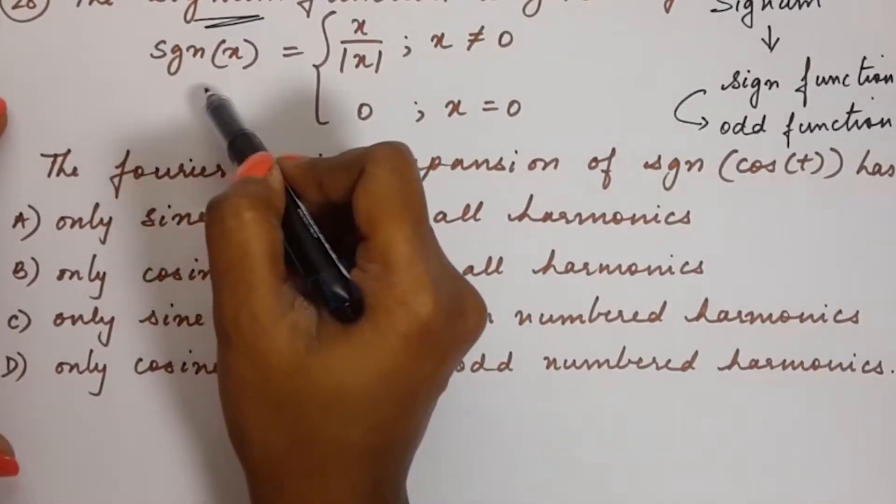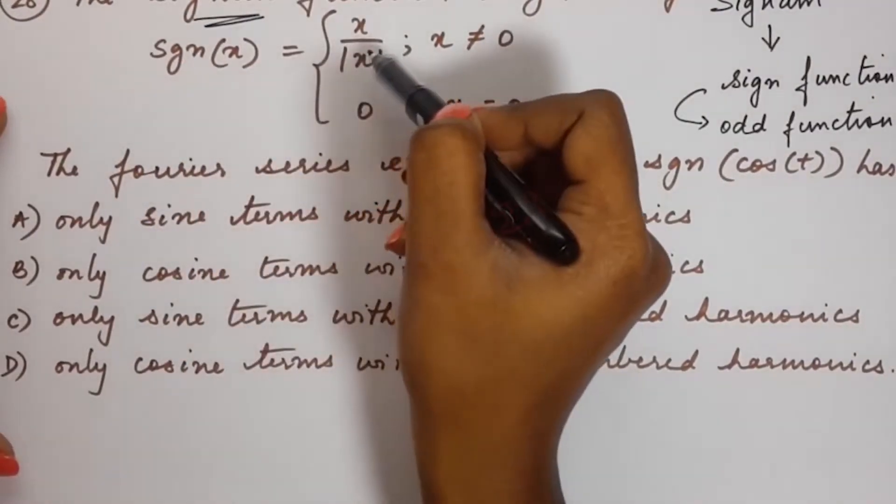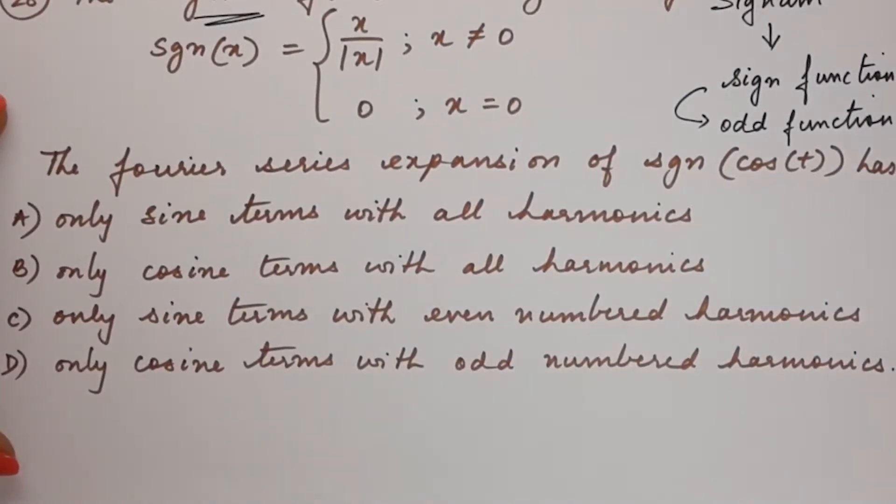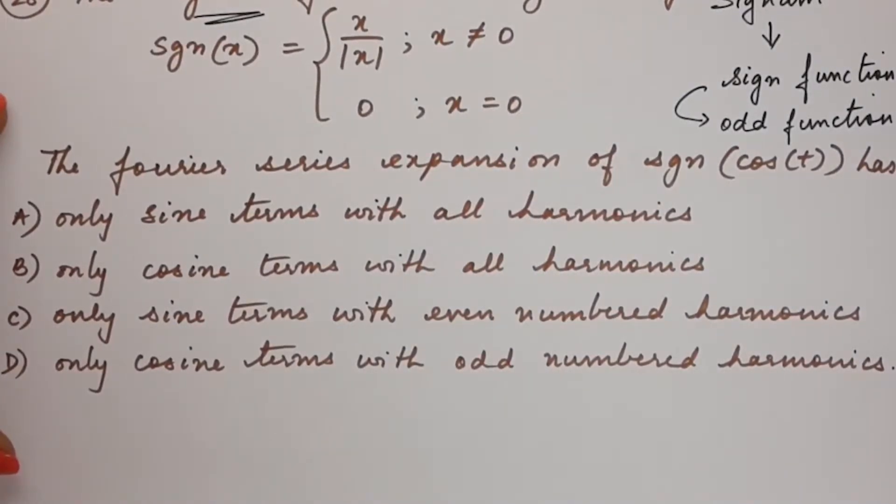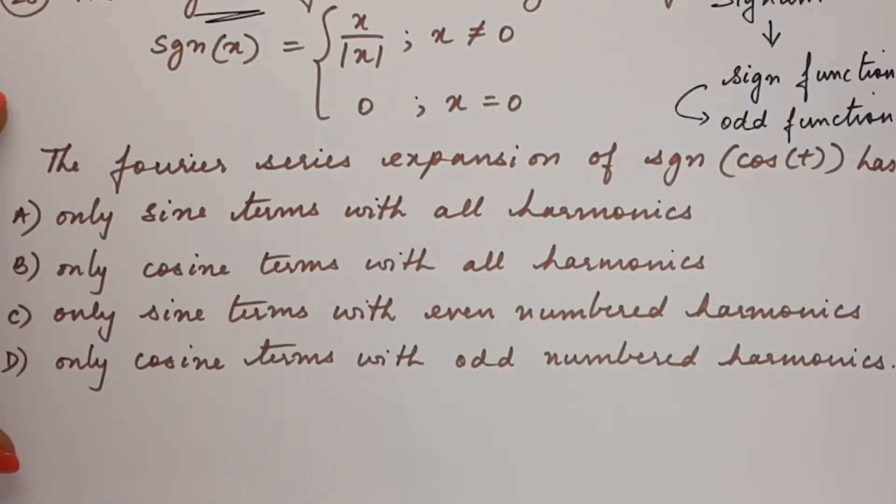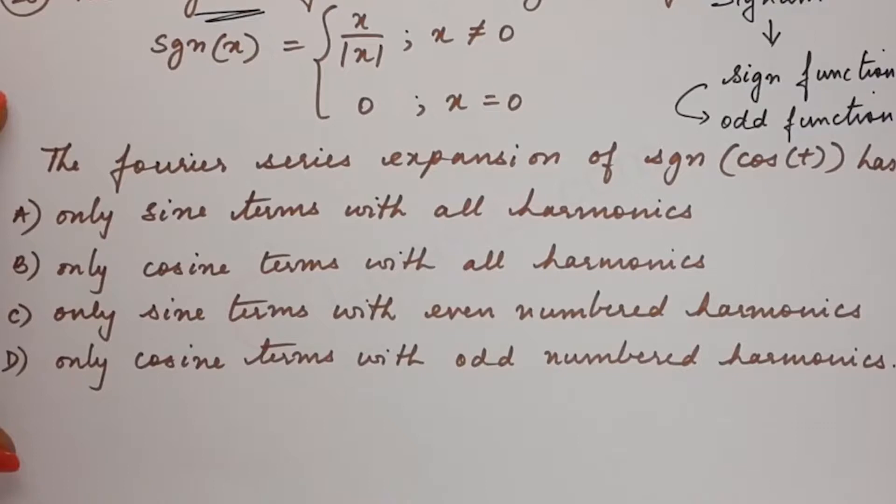So here it's given to us that signum of x equals x by mod x. But they have asked us the Fourier series expansion of signum cos of t. So let's substitute cos t in place of x.